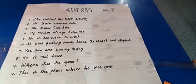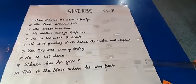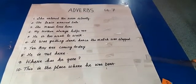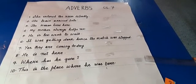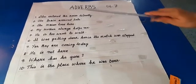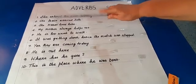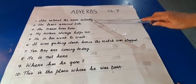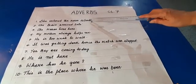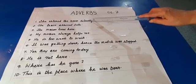Sentence one reads: she entered the room silently. When you look at the sentence, we know that 'entered' is the verb, or the doing word. When I ask the question 'how did she enter the room?' your answer will be 'silently.' Therefore, we know that 'silently' is the adverb in this sentence.